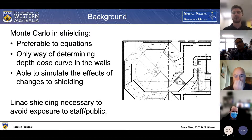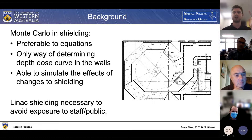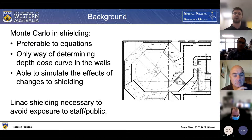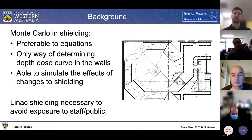Linac shielding is quite necessary to avoid exposure to staff and the public not receiving radiotherapy, as the radiation involved can be quite harmful to healthy tissue. We want to restrict all that exposure to within the bunker itself and avoid exposure to the rooms outside. Monte Carlo is quite relevant in quantifying where our radiation has been and where our energy has been deposited.